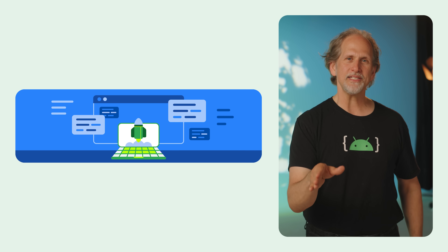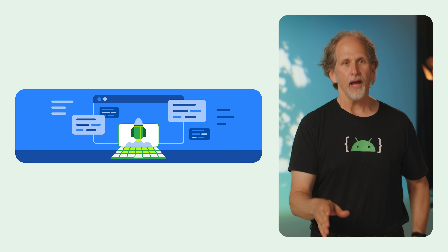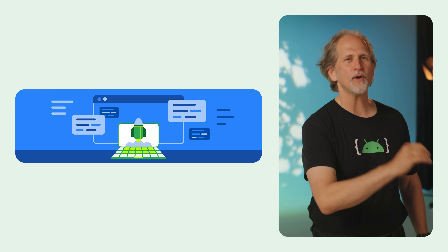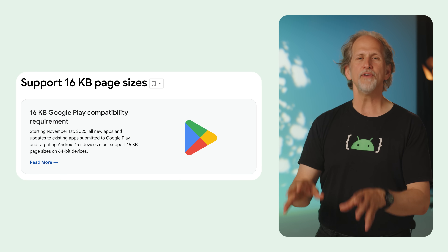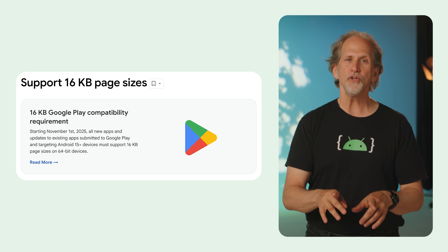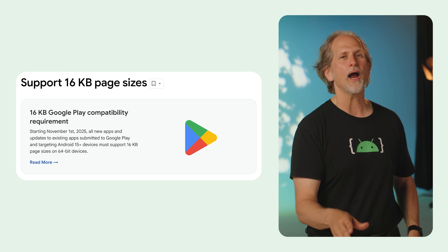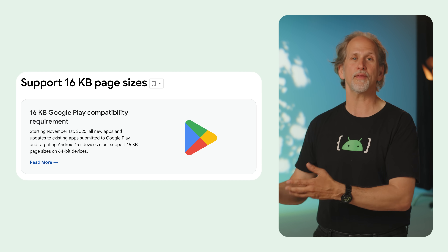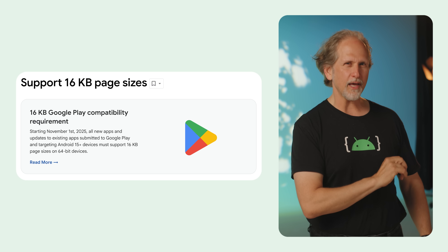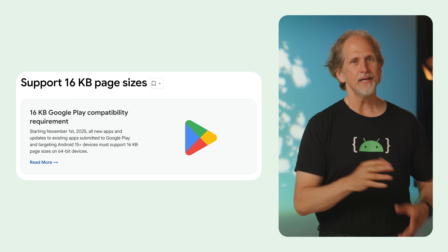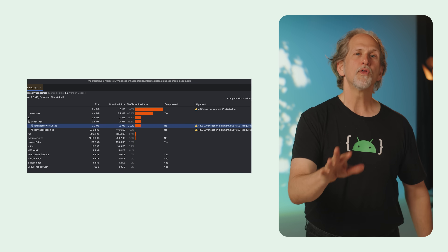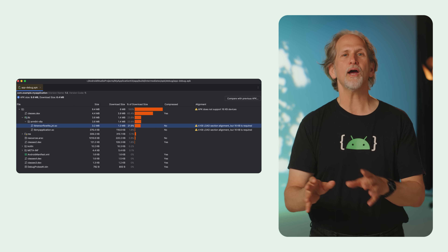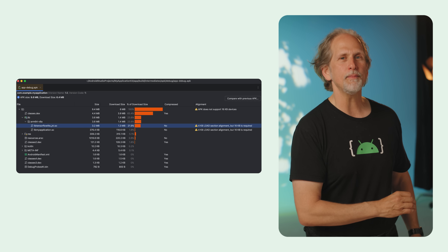Android is transitioning to 16 KB memory page sizes. This change can lead to a 5% to 10% overall performance improvement, including faster app launches and reduced battery consumption. Starting November 1, 2025, all new and updated apps on Google Play targeting Android 15 or higher must support 16 KB page sizes. The good news is that apps built with only Kotlin or Java are already compatible, although you'll want to check any libraries or SDKs you use, since many of them make use of C++. For those with C++ code, the latest tools like Android Gradle Plugin 8.5.1 and NDK r28 enable 16 KB alignment by default.